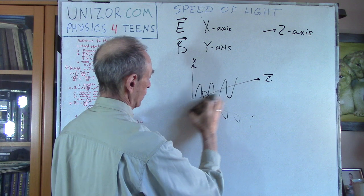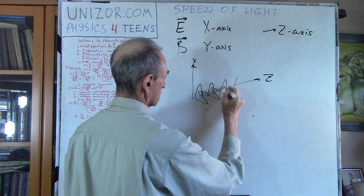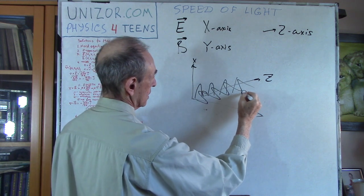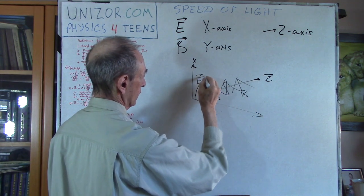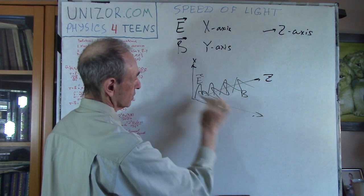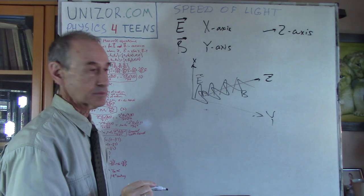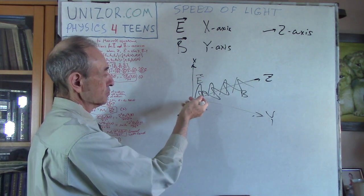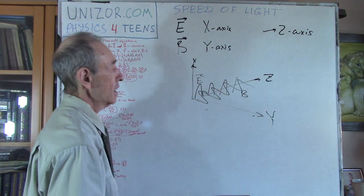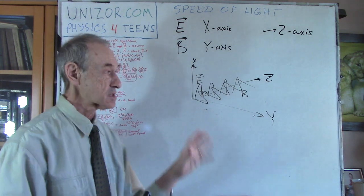So this is B and this is the E vector. E goes up and down along the x-axis, B goes along the y-axis, and the whole thing is propagating in the z direction. The changing electric field produces a changing magnetic field, which produces a changing electric field, and so on — that's how it propagates. This is how electromagnetic oscillations actually go.